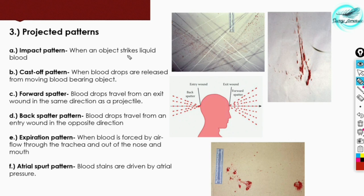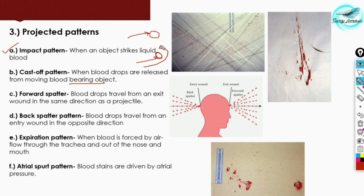The impact pattern is formed when an object strikes liquid blood — liquid blood is present and an object strikes it. The second is the cast-off pattern, formed when blood drops are released from a moving blood-bearing object. For example, if a ball with blood on it is being rolled in a particular direction, the stains formed through that movement are termed a cast-off pattern.